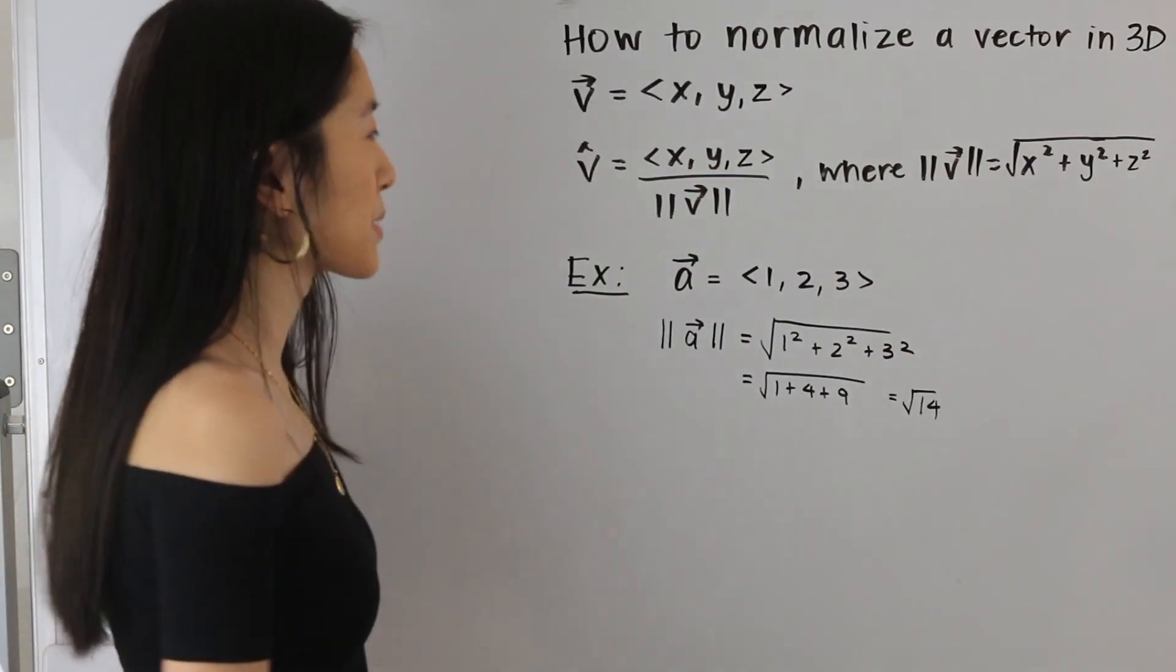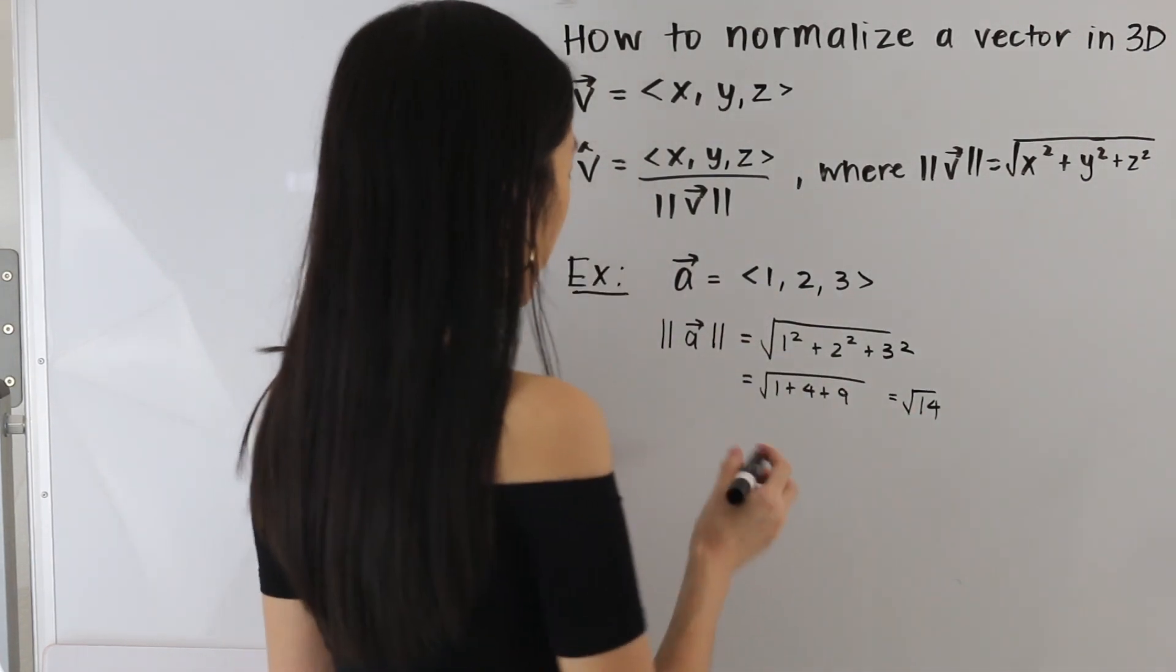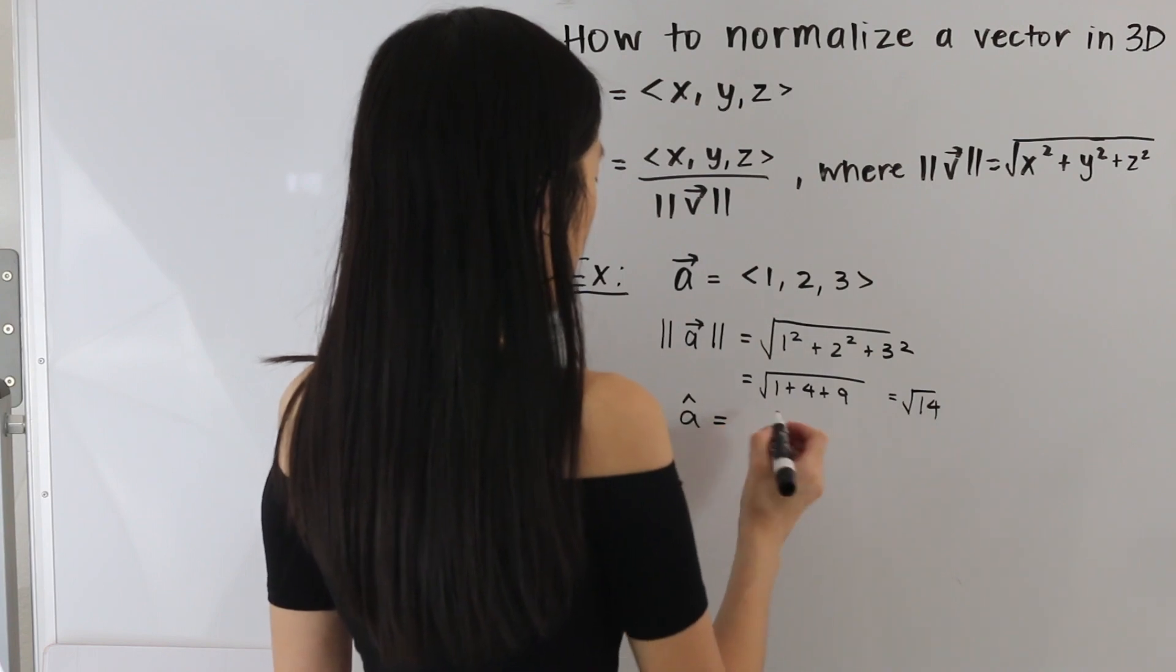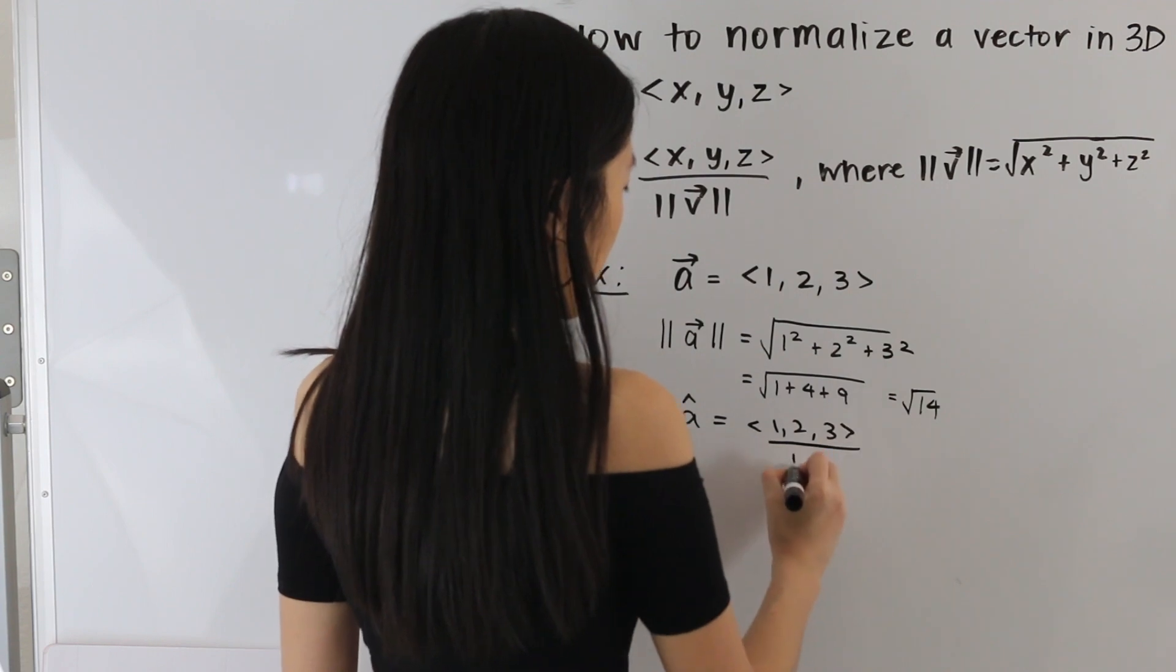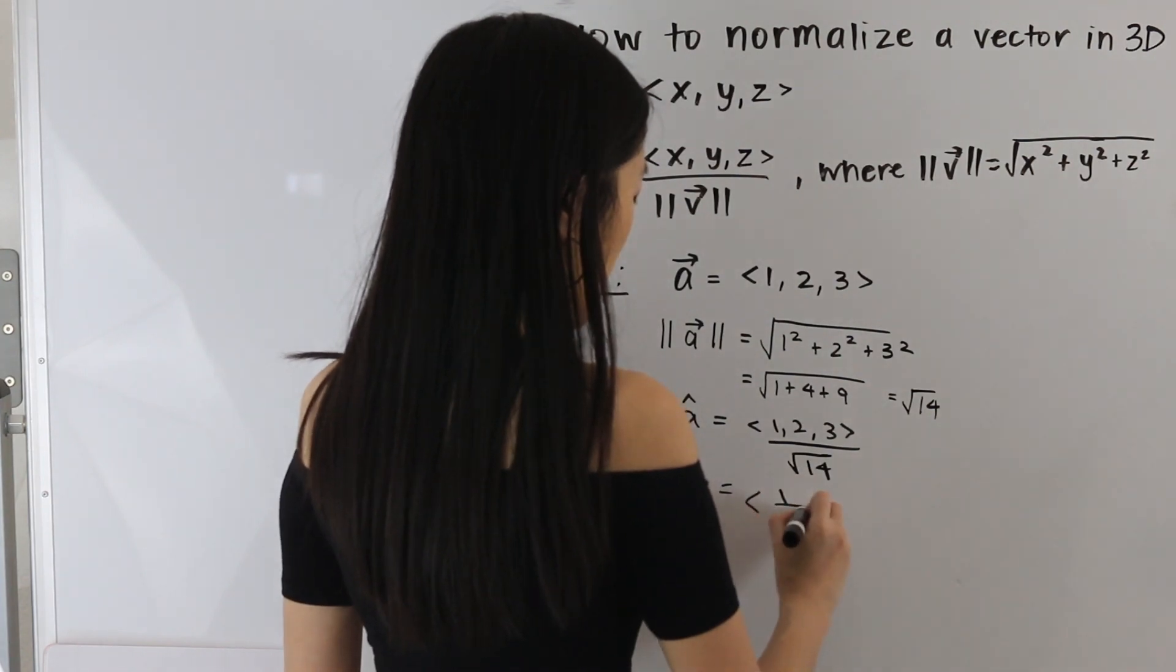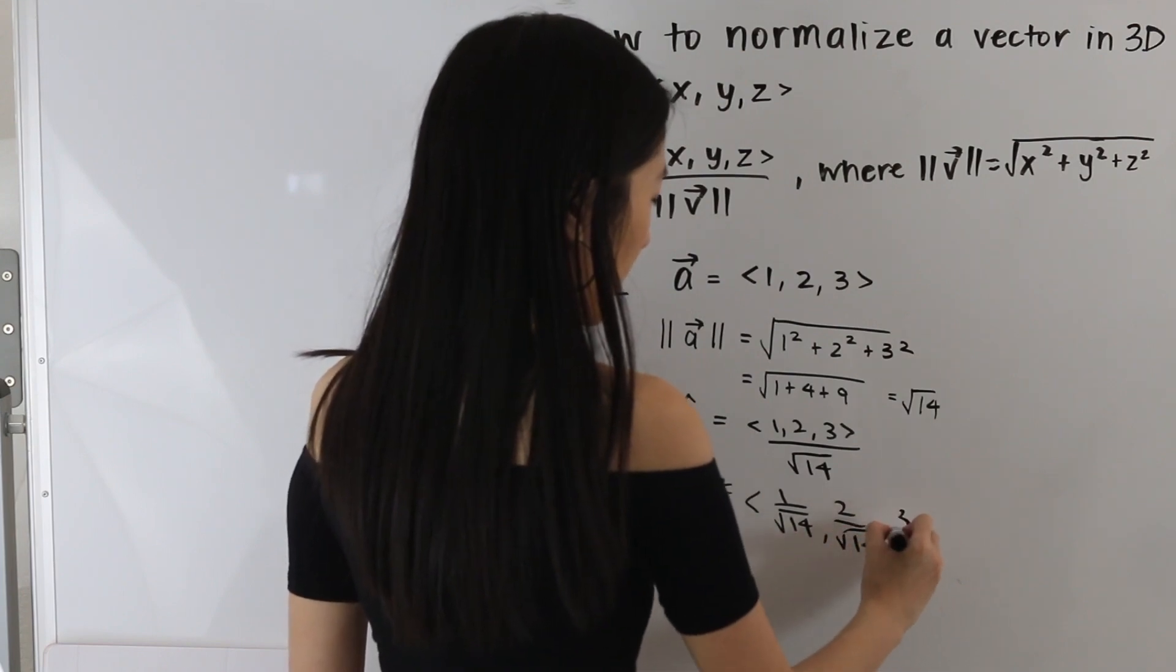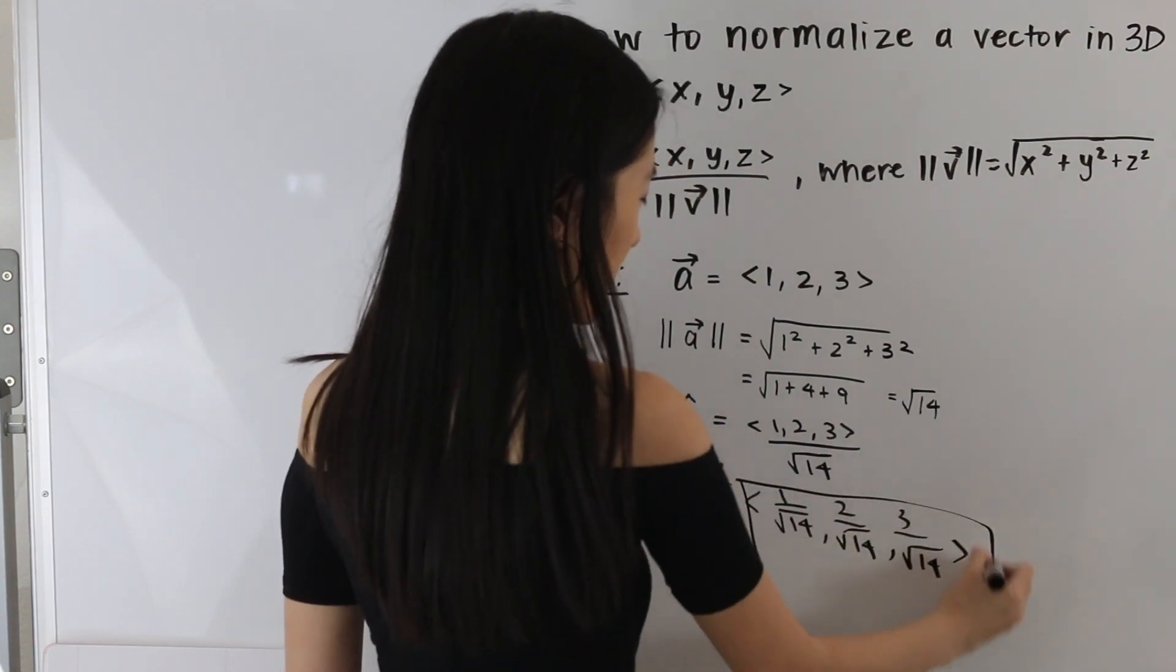So the next thing that we're going to want to do is plug in our vector and its magnitude into this formula here. So we get that the unit vector of a is equal to 1, 2, 3 divided by the square root of 14. And let's go ahead and rewrite this as follows. So 1 over the square root of 14, 2 over the square root of 14, and 3 over the square root of 14. And that is our final answer.